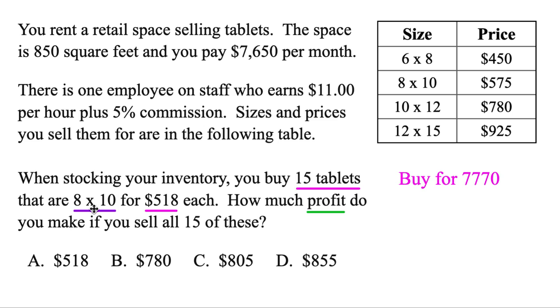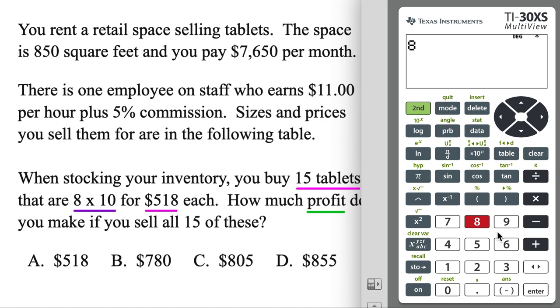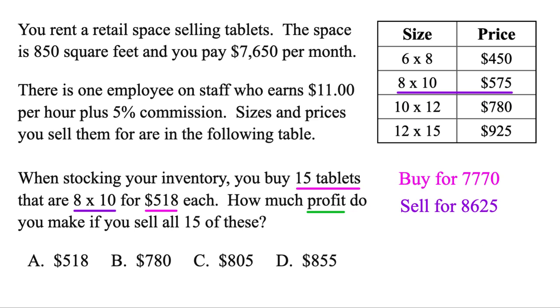Well, these guys are the 8 by 10s. So finally, we're going to end up using the table here. There's our 8 by 10s. That's how much we sell each of those guys for, $575. But we are selling all 15 of these. So once again, let's do 15 times 575. That'll come out to $8625. So to find our profit, we just want to subtract these two guys. $8625 minus $7770. Lucky number. And $855. So the difference between those is going to tell us our profit.